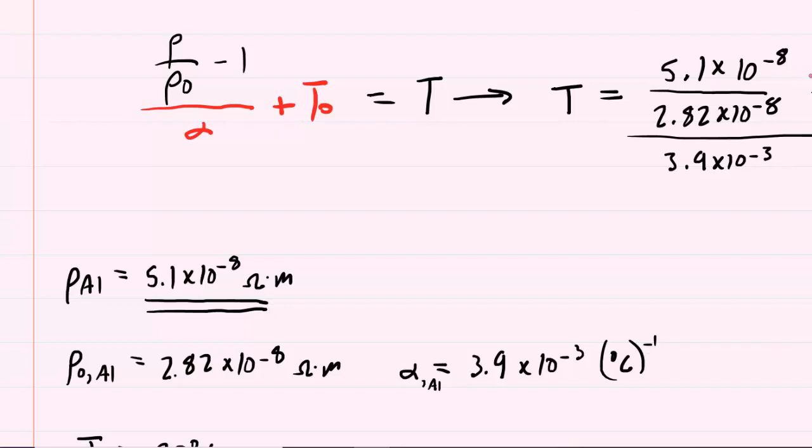A little calculation tip here. These 10 to the negative eighths can actually cancel out since they're the same. So we'll divide 5.1 by 2.82, then subtract 1, then divide by this quantity. You might want to put that in parentheses on your calculator to avoid any calculation error. And then finally add 20 to that. And we can see that the temperature at which aluminum has a resistivity that is three times that of copper is 227 degrees Celsius.